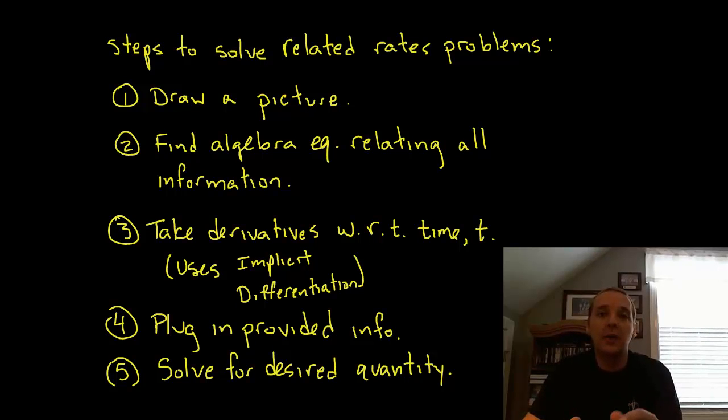The thing is, none of those original variables have time in them - most likely area, volume, length, radius, those sorts of things. So when you differentiate one variable with respect to a different variable, you could think of it as implicit differentiation. Formally it's a version of the chain rule when you differentiate the outside and then move to the derivative of the inside. But in any case, it leaves a residue of dy/dt, da/dt, dv/dt, something dt when you differentiate with respect to time. Next, we're going to plug in all the information they give us and solve for the quantity they're asking for.